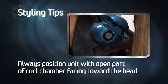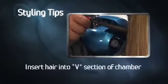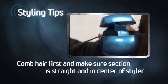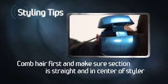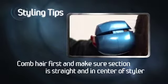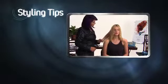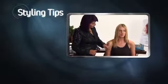Always position the Miracurl with the open part of the curl chamber facing toward the head. Insert hair section into the V portion of the curling chamber. Ensure the hair section is straight and placed neatly through the center of the styler. It always helps, especially with wavy hair, to comb through the section of hair that is about to be curled before placing it in the curling chamber.